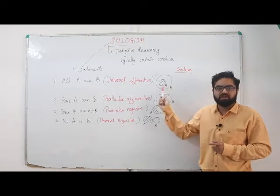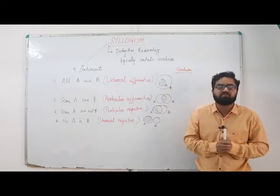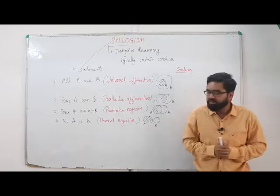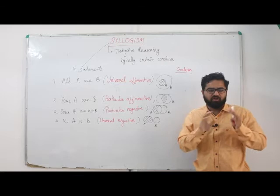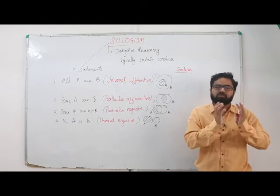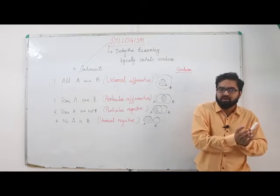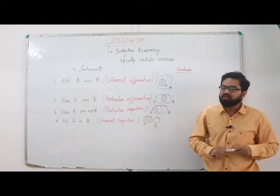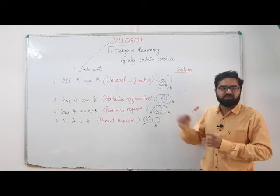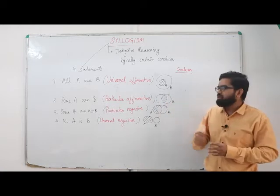The second statement is 'Some A are B.' Here we're not talking about all elements of A, but about some elements of A which are common with B. That's why it's called particular affirmative - the common region between A and B.